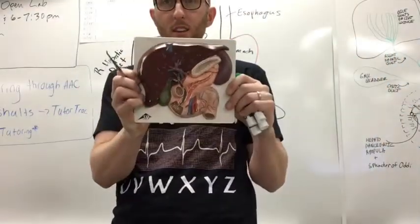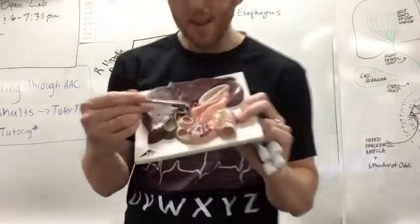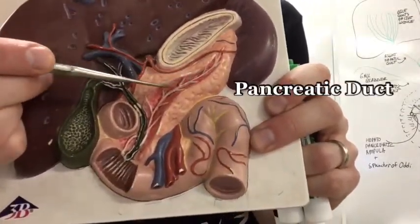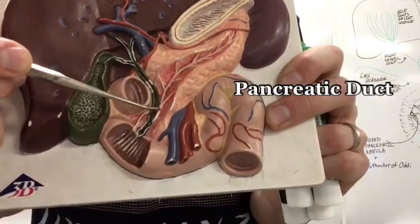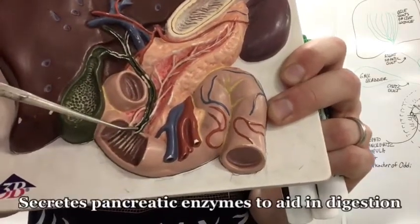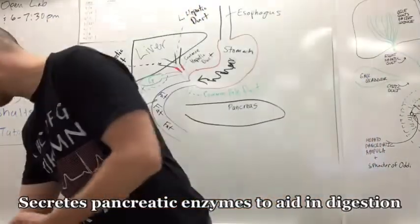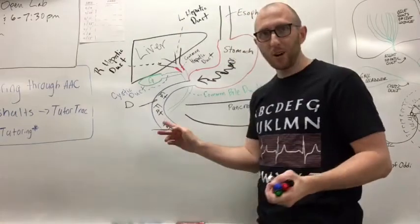But I've mentioned the pancreas because the pancreas actually has its own duct called the pancreatic duct that secretes pancreatic enzymes. And it will merge right into that common bile duct. So let me get back to the whiteboard here.